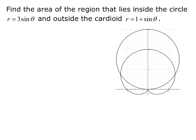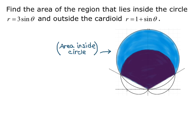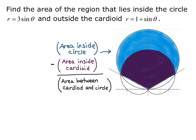We're looking for the area between the cardioid and the circle. We'll need to find the angles of intersection, not the points. Then we'll take the area inside the circle and subtract the area inside the cardioid bounded by the rays going from the origin to the points of intersection. Area inside the circle minus area inside the cardioid gives us the area between the two curves.